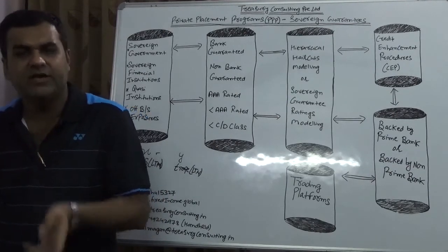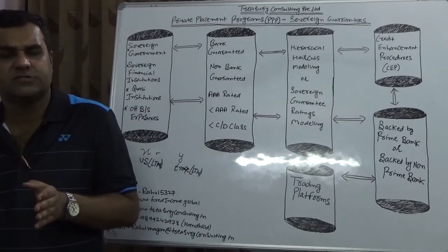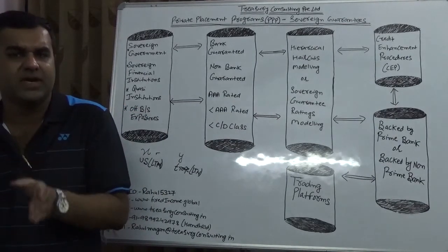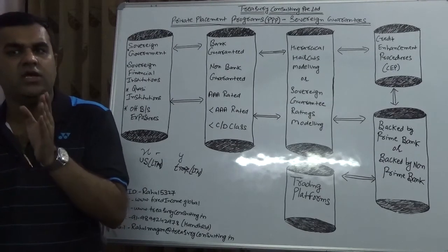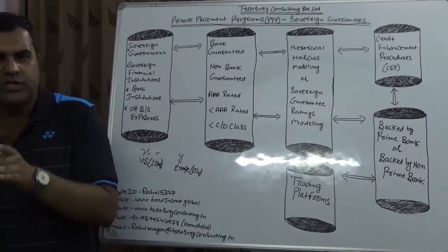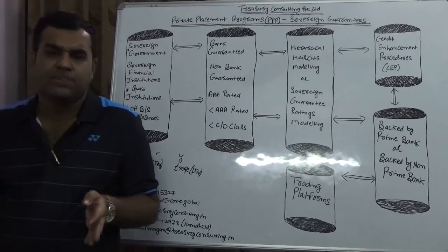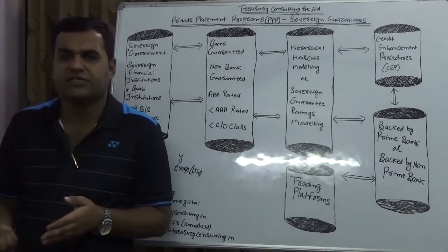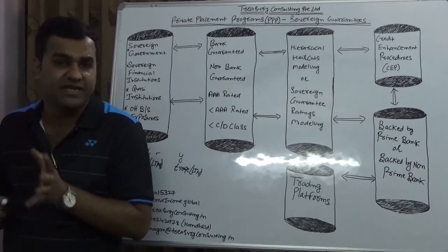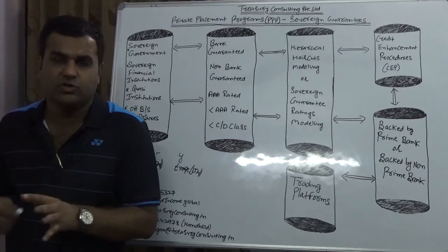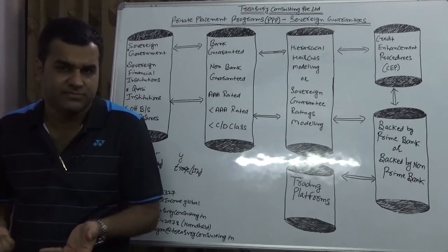When you talk about off balance sheet exposure, the KYC compliance and the CIS, customer information sheet, has to be more than on balance sheet exposure. Because vetting off off balance sheet exposure is quite easy. On the contrary, vetting off on balance sheet exposure is relatively not easy.